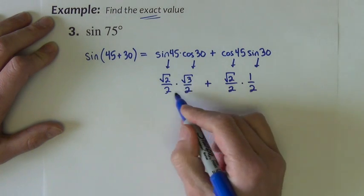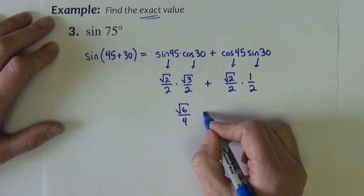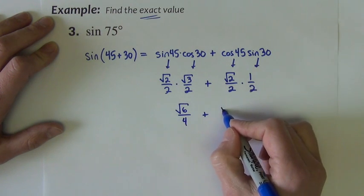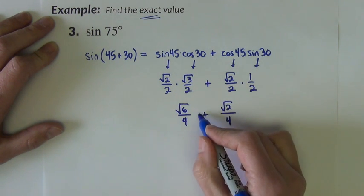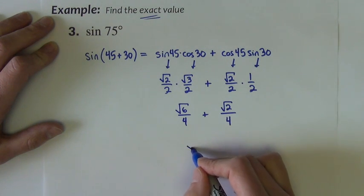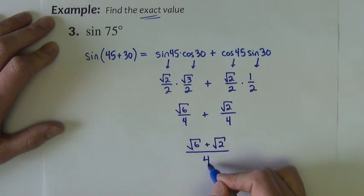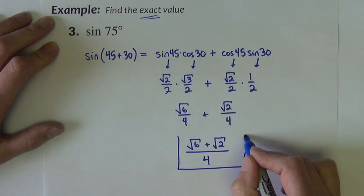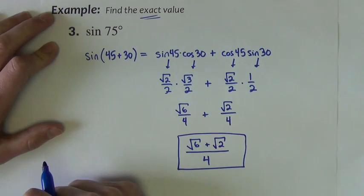Sine 30 is 1 half. I can then multiply these together, giving square root of 6 over 4, multiply together, giving square root of 2 over 4, and since we're now adding fractions together, they have a common denominator, we can put them together, square root of 6 plus square root of 2 all over 4. There's our exact value of the sine of 75 degrees.